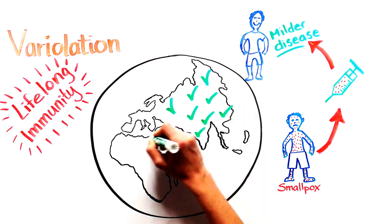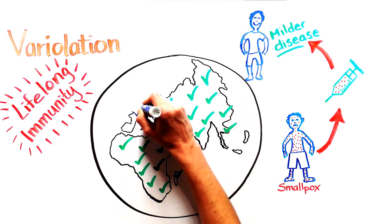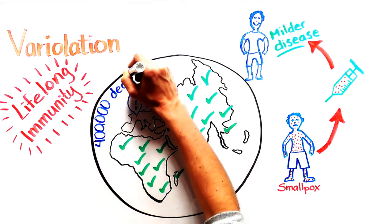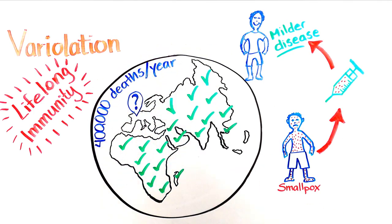While widely practiced in Asia and Africa, this was viewed with skepticism by European physicians and smallpox killed approximately 400,000 Europeans a year in the 18th century.